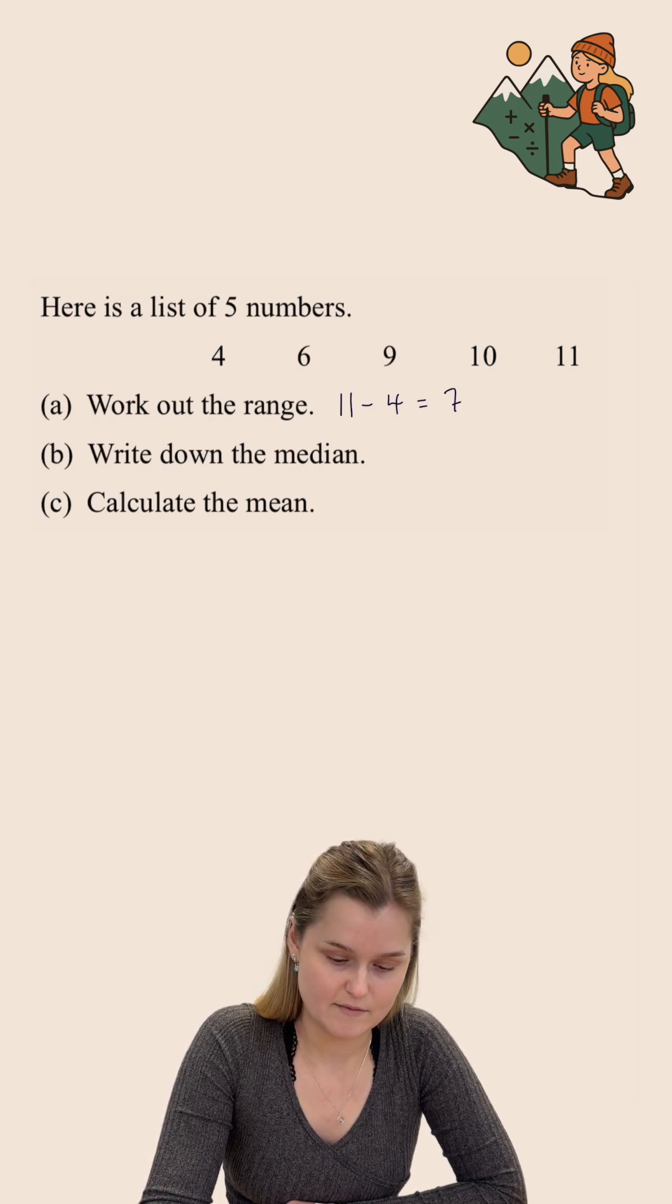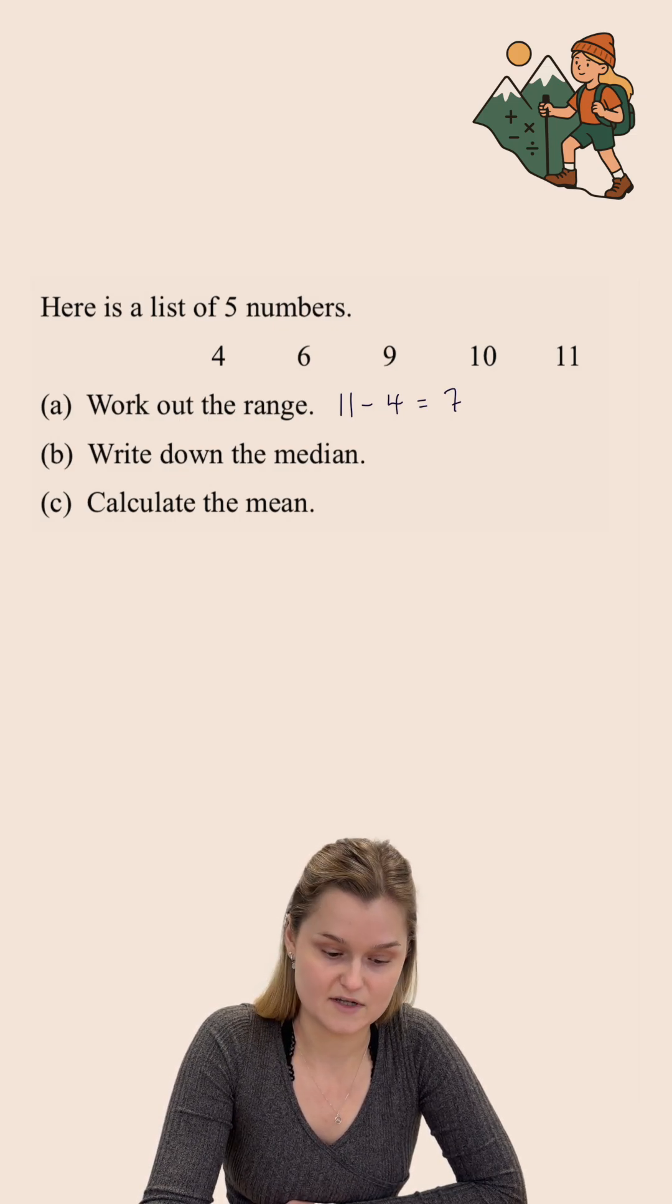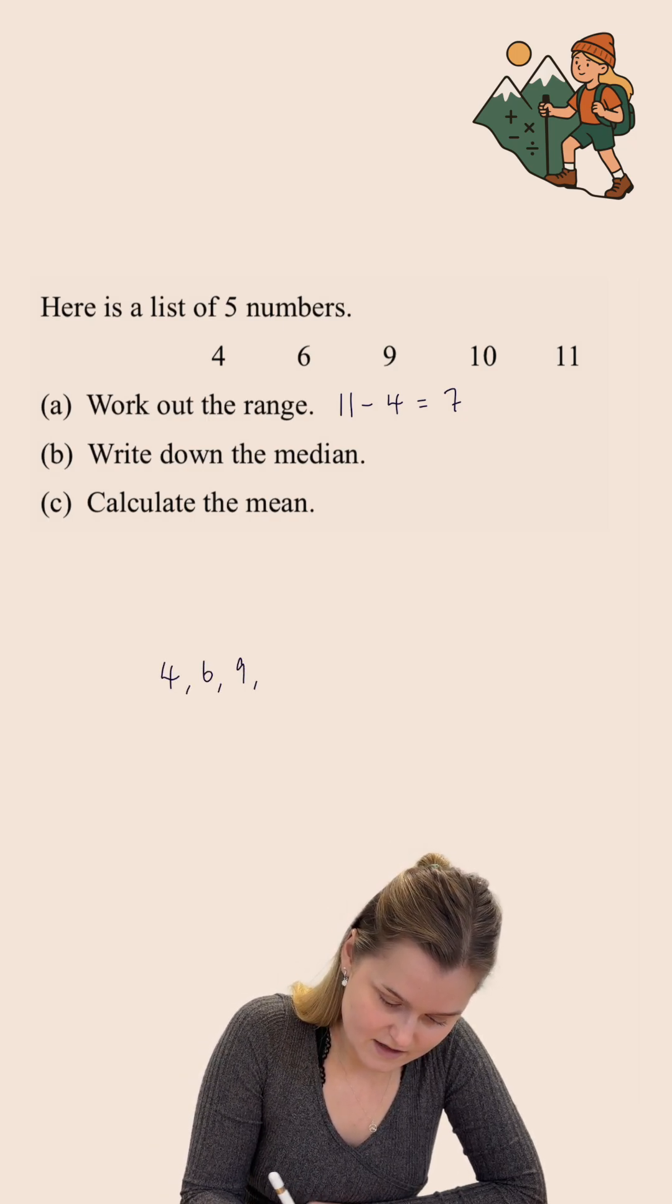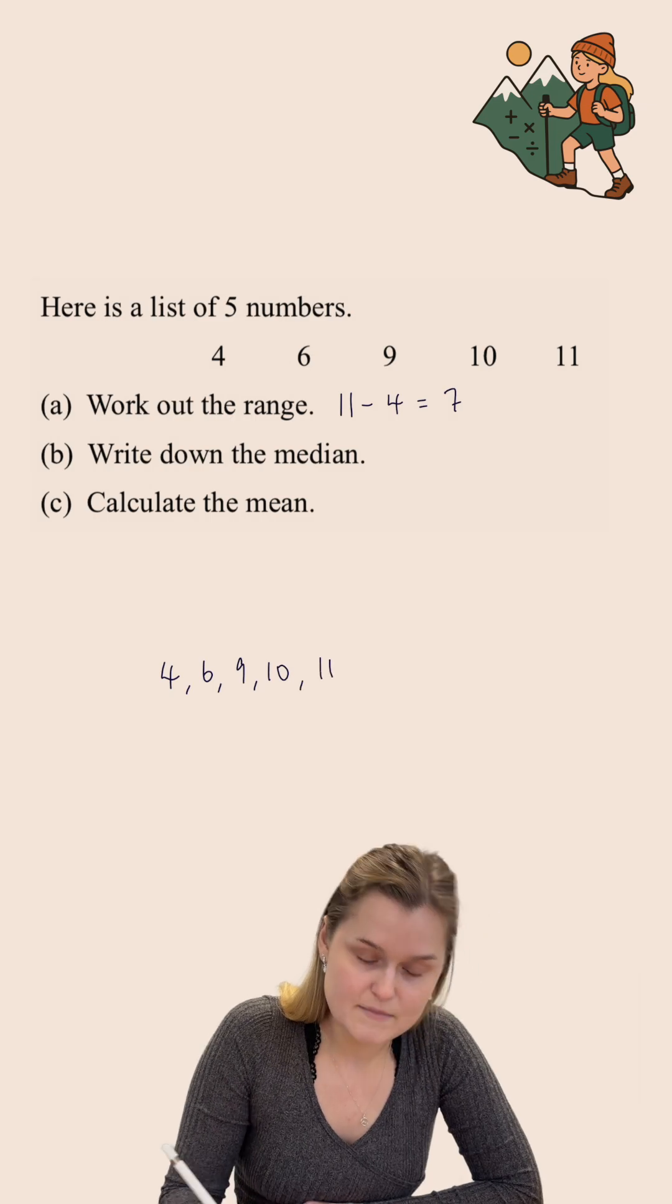To calculate the median of a set of numbers, we first of all write the numbers in order. In this case they already are in order, so I'm just going to write them underneath again. We then want to find the middle number.